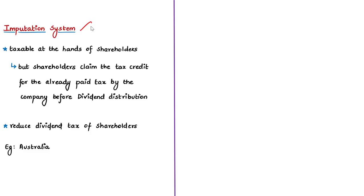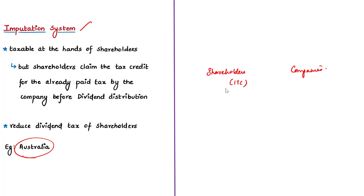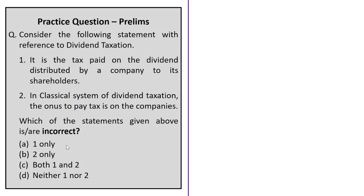The imputation system is adopted in countries like Australia. Under this system, the dividend is taxed in the hands of investors, but they are also entitled to claim a tax credit for the tax paid by the company before dividend distribution. This reduces the income tax payable on the dividend received by investors. Both the company and the investors pay taxes, but investors can claim a tax credit for what the company paid. This system has its own complications and is adopted in fewer countries like Australia.